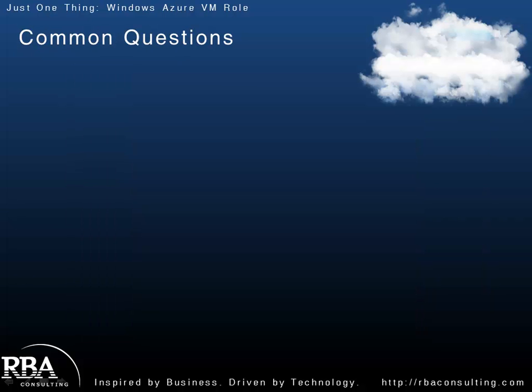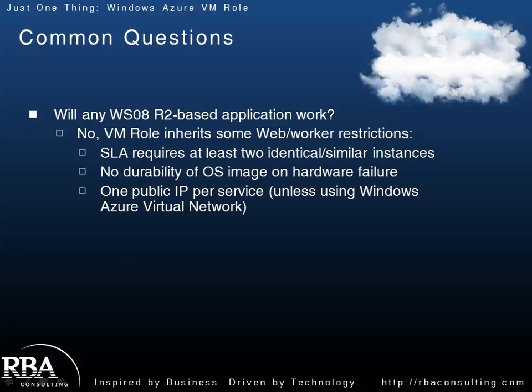A common question is: will any Windows Server 2008 R2-based app work? The answer is no. The VM role, while you have complete control, does inherit some web and worker role restrictions. For example, if you want an SLA for three nines, you need to have at least two identical instances running — and not all applications can handle that. As mentioned previously, there's no durability of the OS image on hardware failure, so if the application is writing to the local disk and an instance gets shut down, anything on that disk is gone. Additionally, you only get one public IP per service, so if you need multiple public IPs, this is not going to work for you.